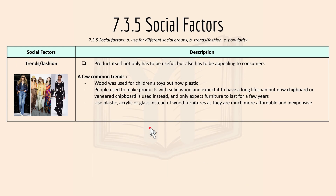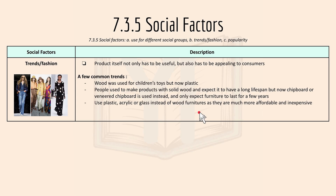For trends and fashions, a product not only has to be useful, it also has to be appealing to customers. Some common trends: wood was used for children's toys but now plastic is mostly used; people used to make products with solid wood expecting a long lifespan, but now chipboard or veneered chipboard is used instead and furniture is only expected to last a few years. Plastic, acrylic, or glass is also used instead of wood furniture as these are more affordable and inexpensive.